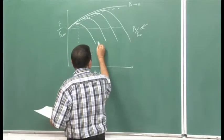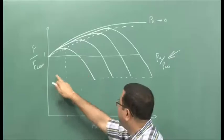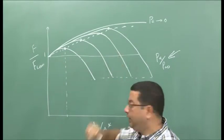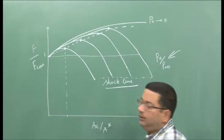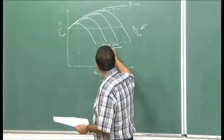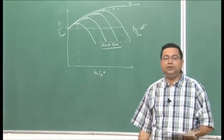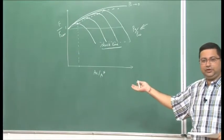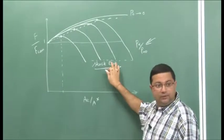Beyond a certain area ratio, the thrust decreases below the thrust produced by a converging nozzle, so the diverging portion gives no advantage beyond that point. We also identified a shock line at which, for all these pressure ratios, nozzle operation is limited because a shock either sits at the exit or moves into the nozzle. The flow becomes subsonic as it crosses the normal shock wave. While pressure will still match the exit pressure, performance is very poor due to large losses.